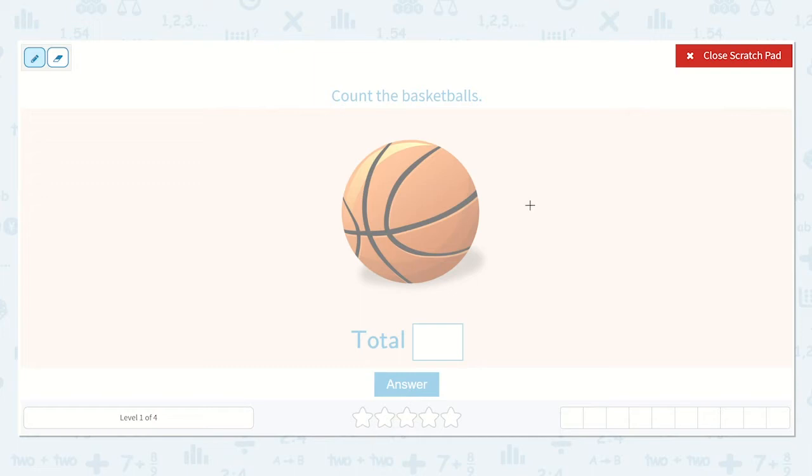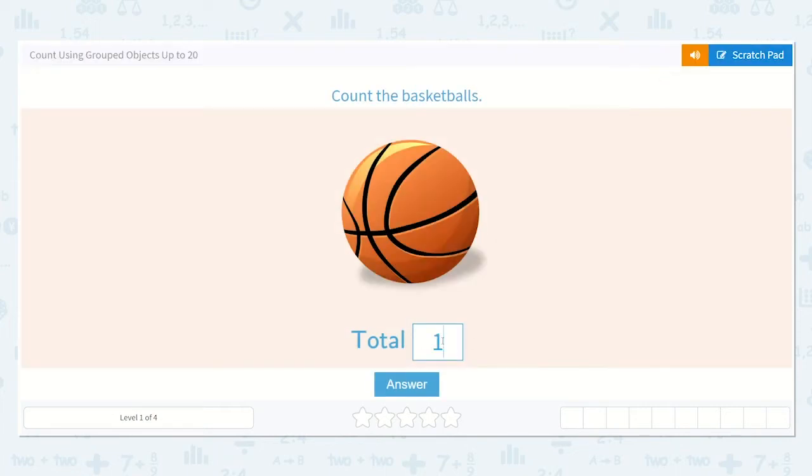I like to put a line under what I'm counting as I count, and here I can see that there is just one. So as I'm counting I would just say one and that is all. So I would put a one in the box. Let's type a one and click answer.